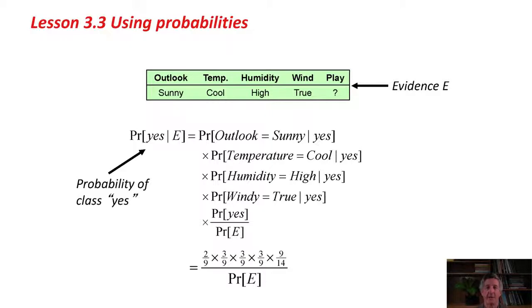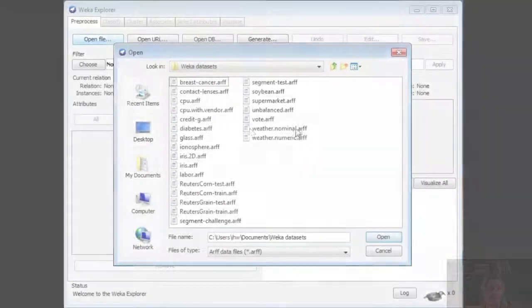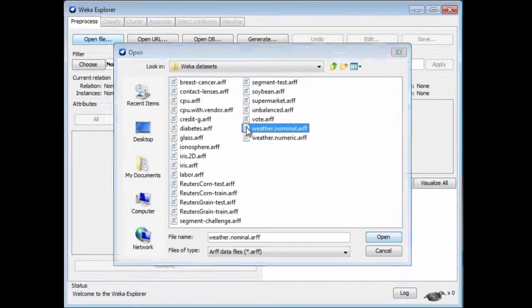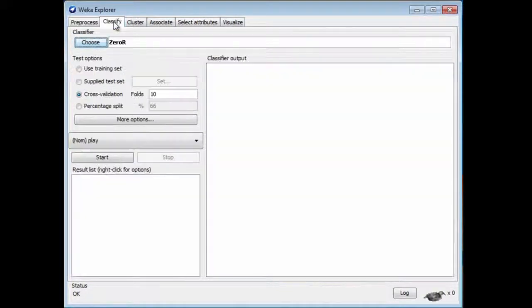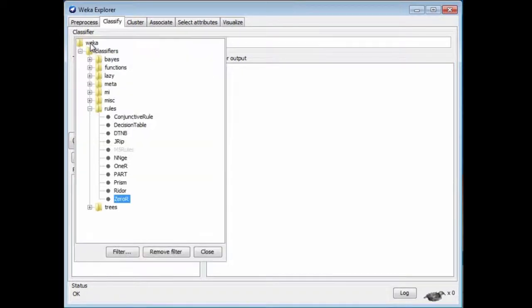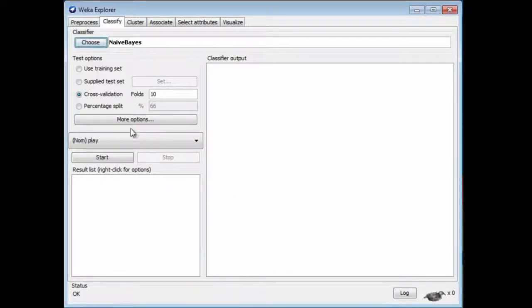It's very simple when you look at it in Weka as well. I'm going to go to Weka here. I'm going to open the nominal weather data, which is here. We've seen that before, of course, many times. I'm going to go to Classify. I'm going to use the Naive Bayes method. It's under this Bayes category here. There's a lot of implementations of different variants of Bayes. I'm just going to use the straightforward Naive Bayes method here. Then I'll just run it.